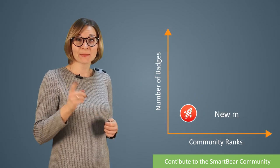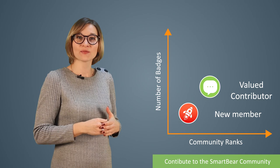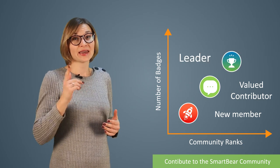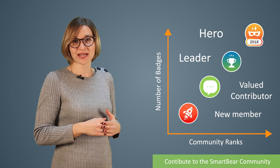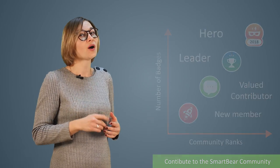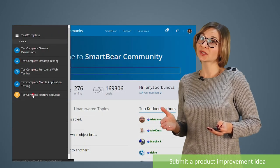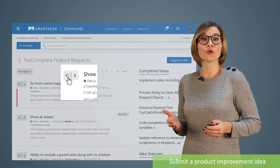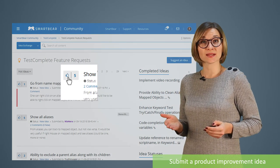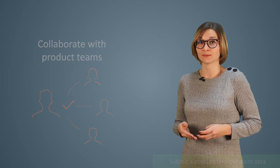One day you may become a community leader, one of the quarterly most active members, and even a Community Hero. This is the most elite community status that you can earn only once a year. Want to help improve a SmartBear product? Leave your product improvement feedback on the feature request form or vote for existing ones. This is a great place where you can talk with the product team.